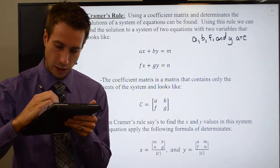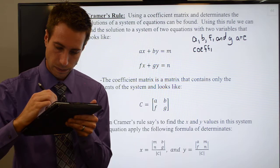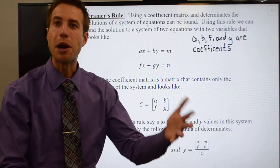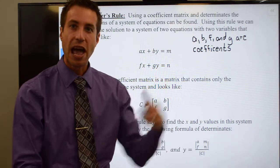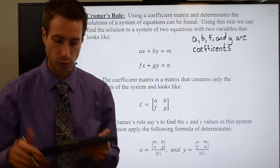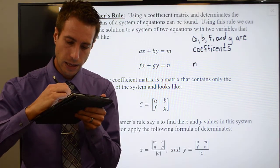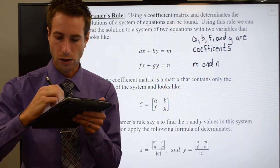The coefficients could be positive or negative — they're just coefficients, numbers in front of our variables. And then the last thing I want to point out is that M and N represent constants — it's what the equation is equal to. So M and N would just be numbers, constants.